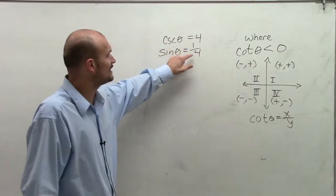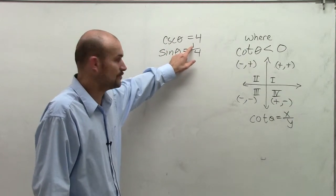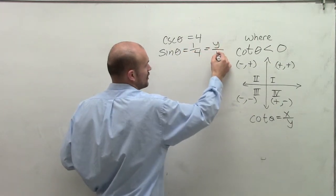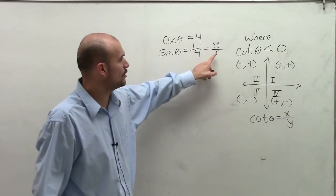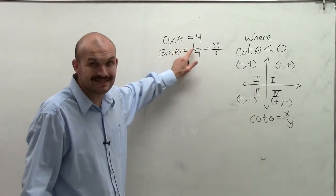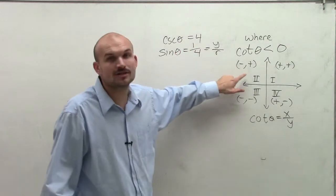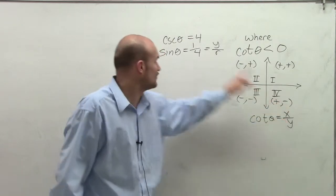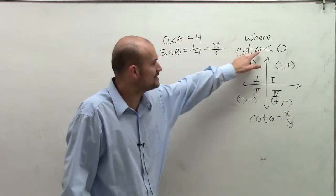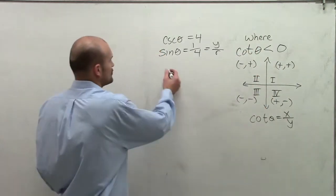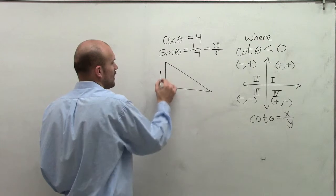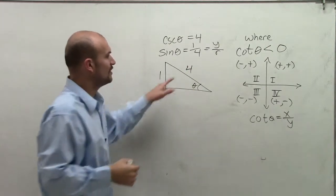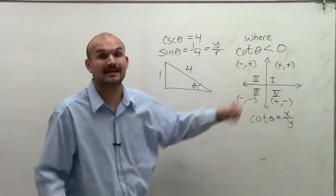Remember, sine is y over r, or opposite over hypotenuse. Since y is positive, our opposite side must be positive. That means we have to use the second quadrant, because in the fourth quadrant y is negative. Our y is positive, but cotangent must be negative — that condition is met in the second quadrant. So my triangle is in the second quadrant: y equals 1, r equals 4, and x is negative.